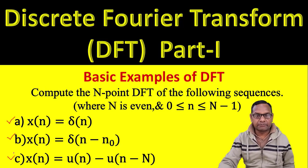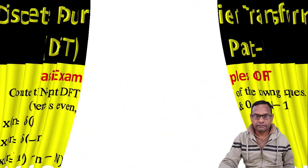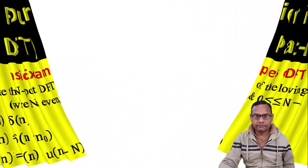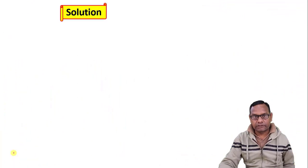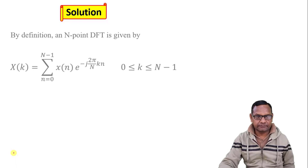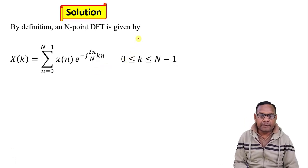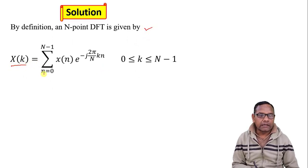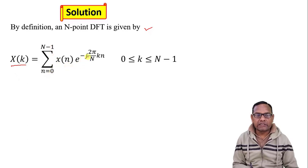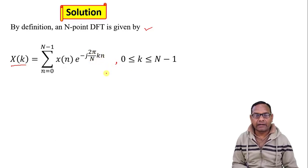Let us start with the basic examples. Start with the solution. Before starting the solution, we will discuss the basic definition of discrete Fourier transformation. By definition, an N-point DFT is given by X[k] which equals the summation from n equals 0 to N minus 1 of x[n] times e to the power minus j 2 pi by N times k times n, where k is from 0 to N minus 1.